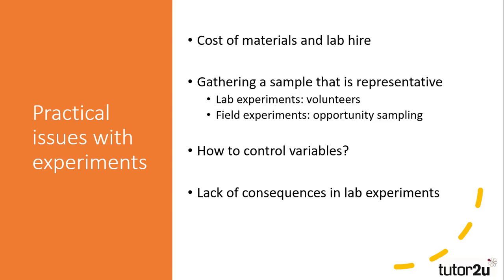Despite the advantages of experiments, there are practical, ethical and theoretical issues for researchers to consider. Practical issues include the cost of materials and lab hire, making experiments more costly than other methods such as questionnaires. They also tend to be smaller in scale, creating problems when trying to obtain a representative sample. Lab experiments often rely on volunteers and may pay participants, and numerous examples exist where volunteers were social science students with an ulterior motive. Field experiments are based on opportunity sampling which, whilst theoretically representative, often relies on those present in a certain place and time and may not reflect the diverse range of people in wider society.